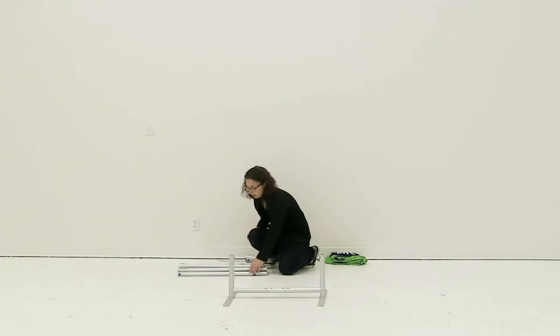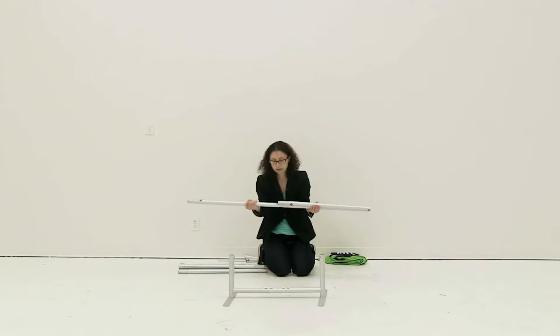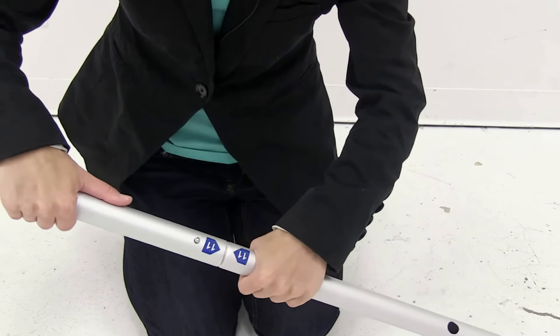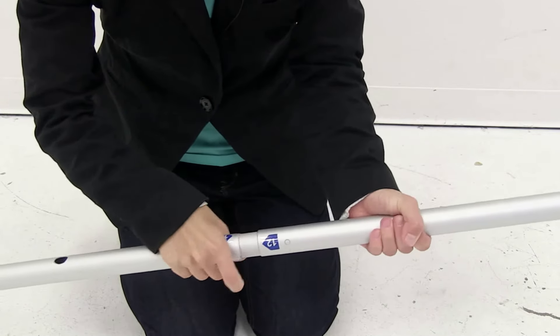The next thing I'm going to do is attach the shock corded poles together using the snap buttons. On the larger displays there may be multiple poles you will need to connect together.